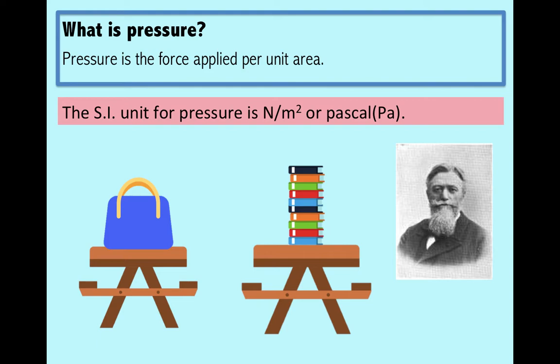Sometimes pressure is also assumed to be the concentration of force in a particular area. So I hope you can see that the force is more effective in case of the books and less effective in case of the bag. That just means that the pressure is higher in case of the books and lesser in case of the bag.